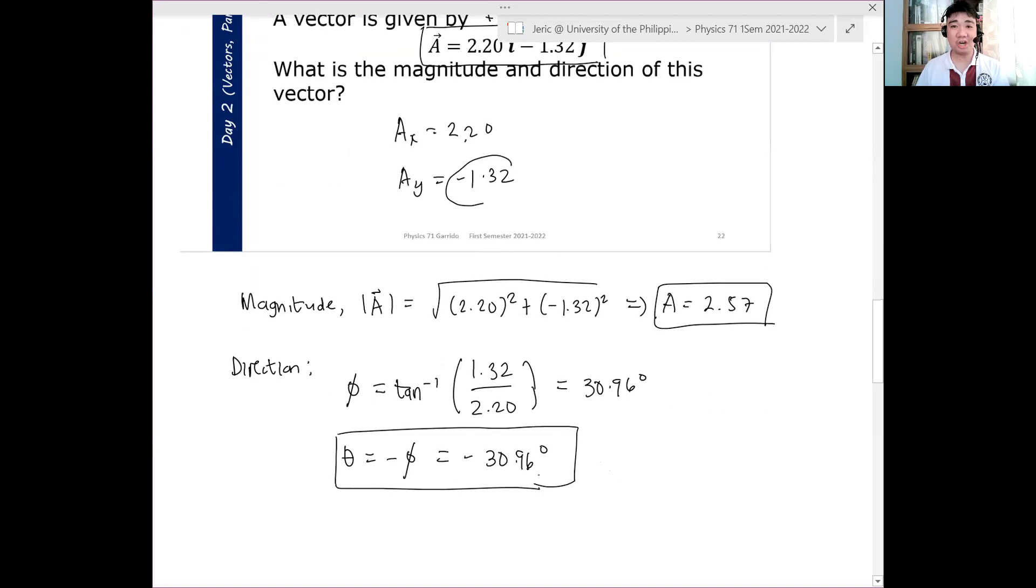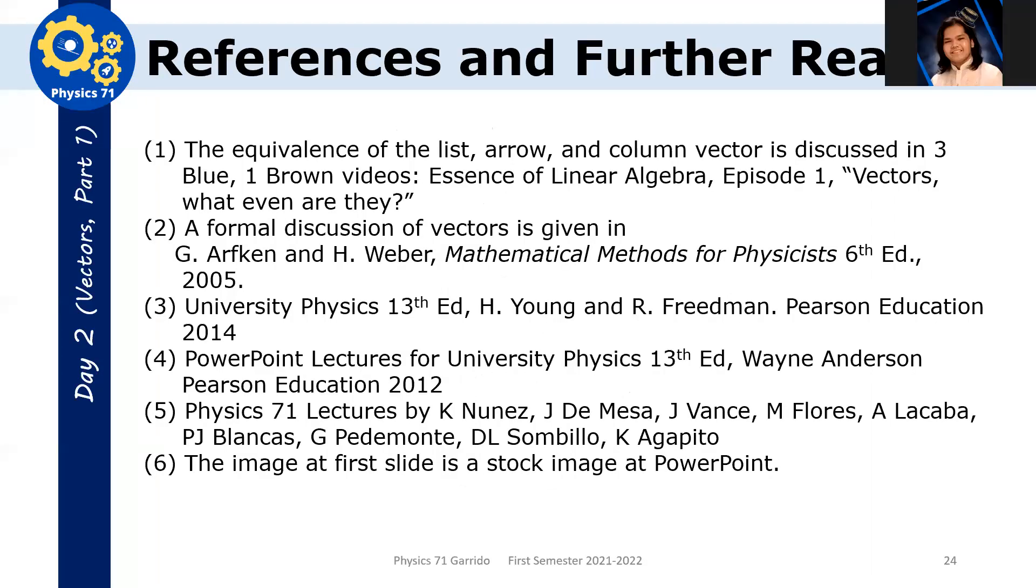Again, our implicit assumption here is that the angle is with respect to the positive X axis. The negative sign indicates that it is towards the quadrant 4 direction. Okay? So, may tanong ba? So, are there some references? Question? Do you have another question?